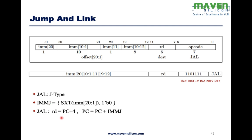With JAL, the PC will be set to PC plus the immediate value, so it jumps to a new location. At the same time, the destination register defined as part of the instruction will hold the value of PC plus 4 — the address of the next instruction. That stored address is for future reference, which is why it's called Jump and Link.